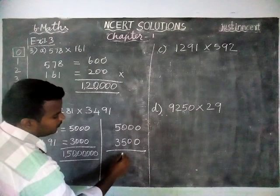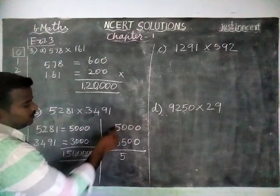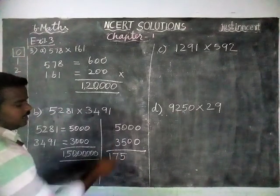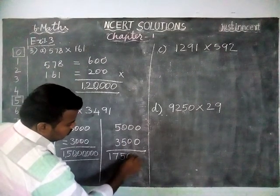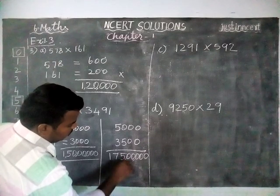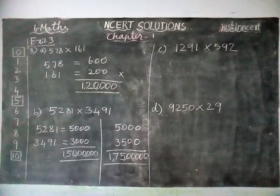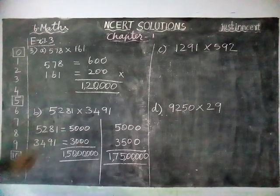When we are finding this answer, 5 times 5 is 25. Then 5 times 3 is 15, plus 2 is 17. We have 1, 2, 3, 4, 5 zeros. So now, 1 crore 75 lakhs. When we round off to nearest 1000 for both, versus 1000 and 100 for the next sum.